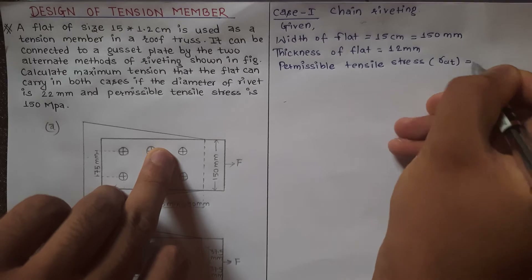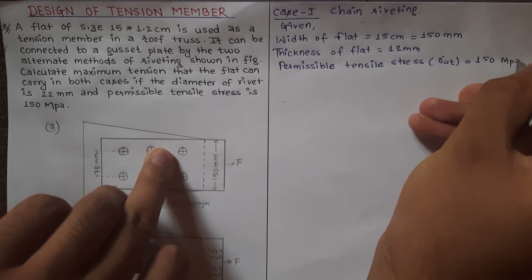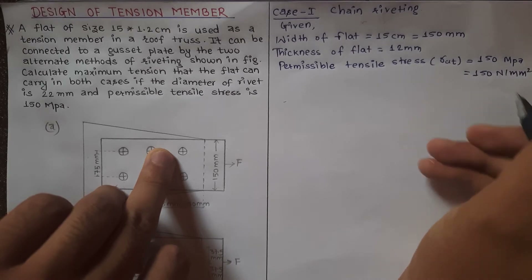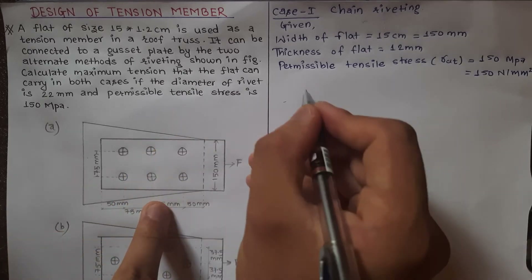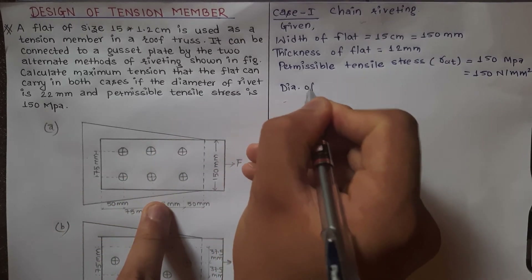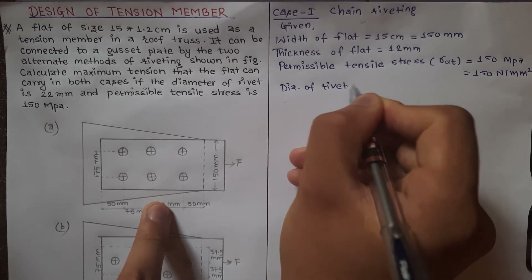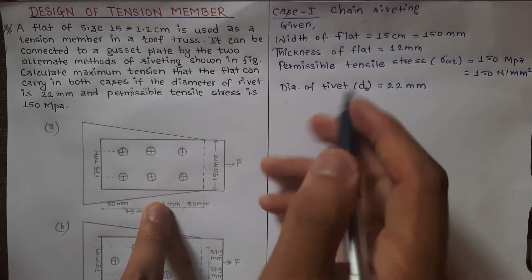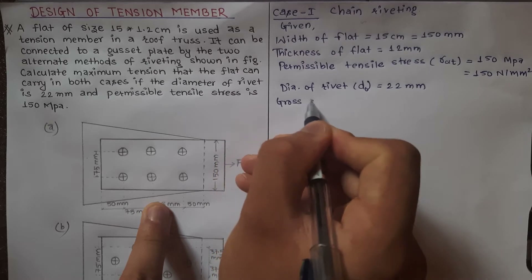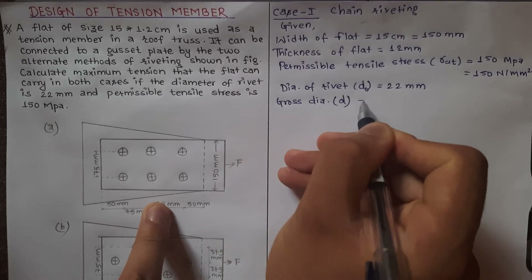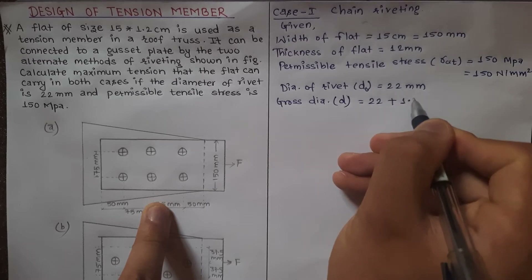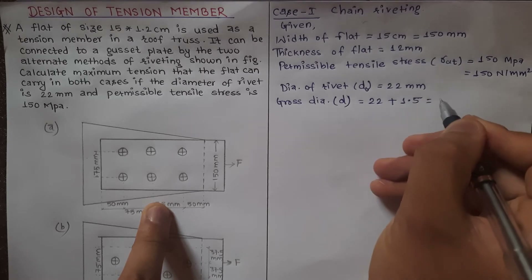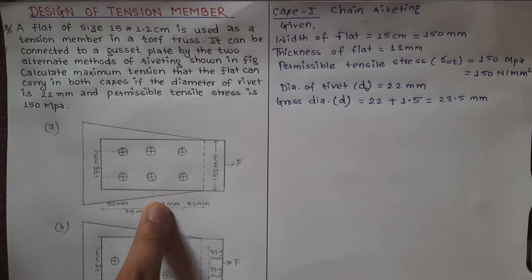Permissible tensile stress σ_at = 150 MPa = 150 N/mm². Diameter of rivet d = 22 mm. Gross diameter d₀ = 22 + 1.5 = 23.5 mm.